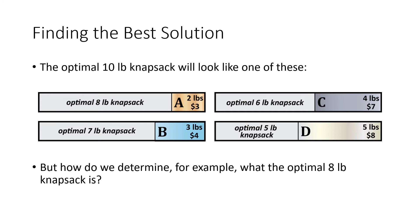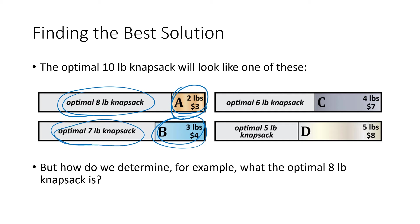Here's how it's going to work. If we think about finding the optimal 10-pound knapsack, we want to consider what the last object placed in that best knapsack was. If it was an A, then whatever we had before must have been the best 8-pound knapsack — we want the best possible 8-pound knapsack and then add our A to that. Or if the last thing placed was a B, which weighs three pounds, we'd add it to the optimal 7-pound knapsack, and so on.